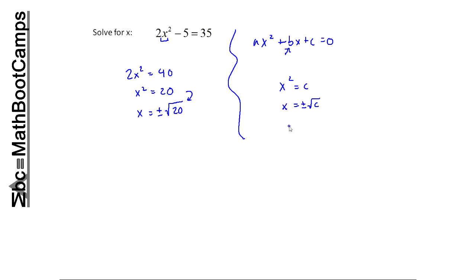That makes it very, very easy to remember. Now of course I'm not going to leave it like this, because 20 under a square root can be simplified — it's 4 times 5. And 4 is 2 times 2, so it's a perfect square. So I can write this as x equals plus or minus 2 times the square root of 5.